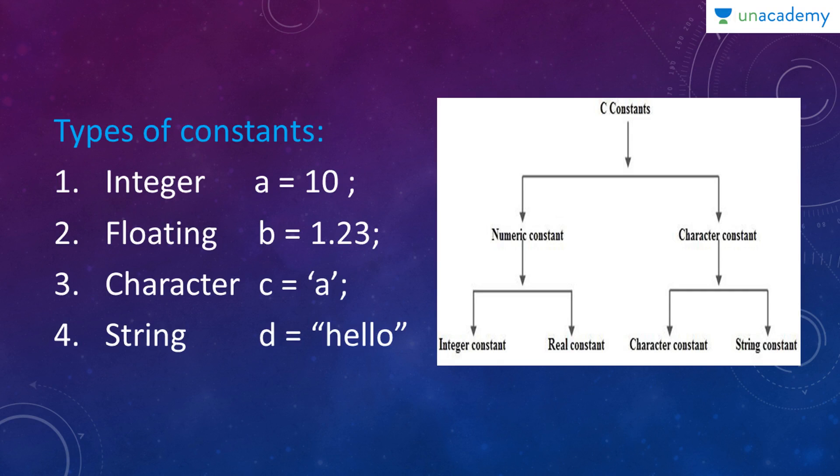Constants are of types: numeric constant and character constant. Numeric constants are of two types: integer constant and real constant. Real is nothing but floating point constant. And then we have character constant which is a character or a string.